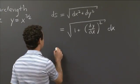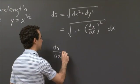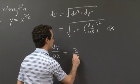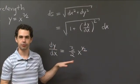So y is x to the 3 halves, so dy dx is easy to compute. y prime dy dx is just 3 halves x to the 1 half, or 3 halves square root of x.